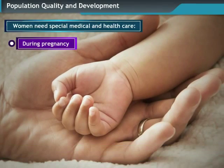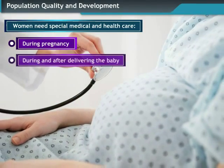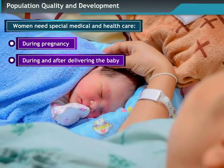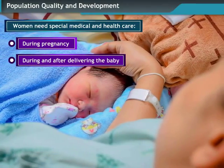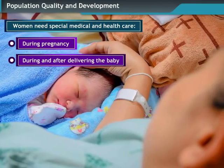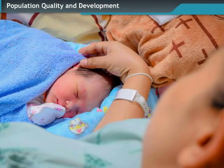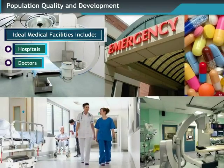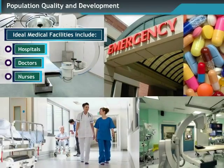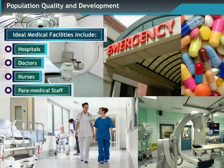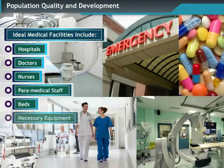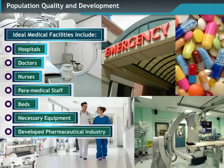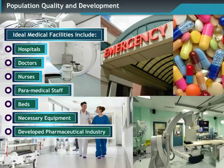Right from the time a baby is conceived till delivery, a woman needs special care in terms of medical and health facilities. Medical facilities include hospitals, doctors, nurses, paramedical staff, beds, necessary equipment, and a well-developed pharmaceutical industry.